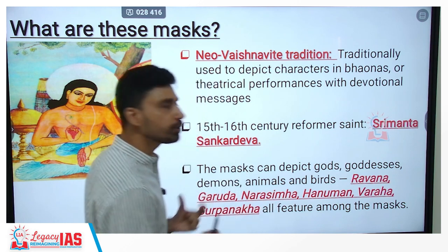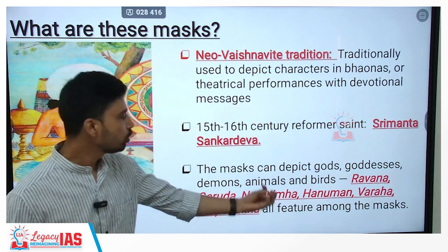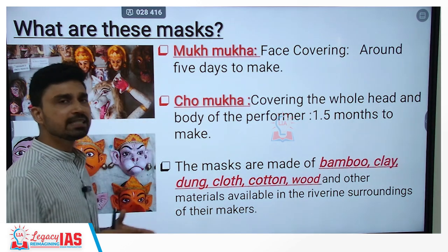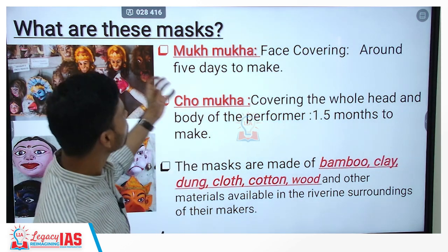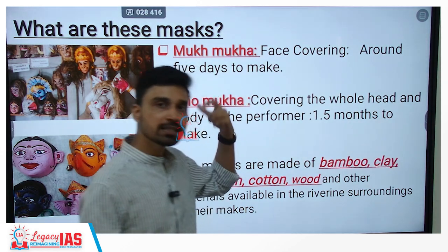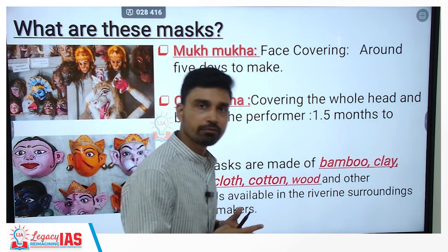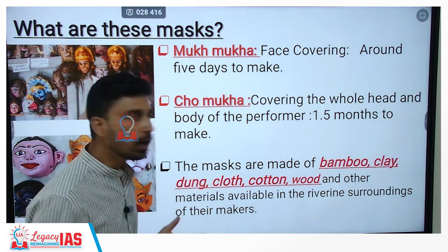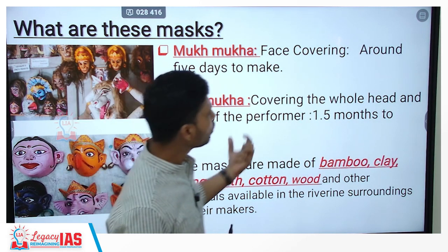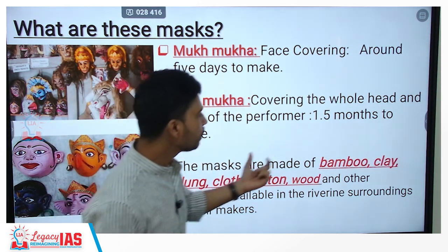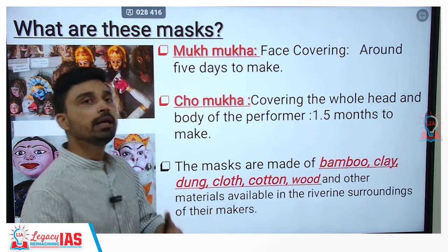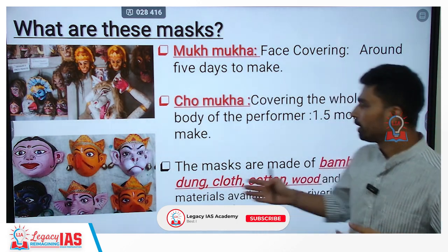The masks also depict major heroes and villains such as Ravan, Garud, Narsimha, Hanuman, Varah, and Surpanakha. The masks are classified into two categories. The first, called Mukha Mukha, covers the entire face of the performer and takes around five days to make. The second, called Chaumukha, covers the entire head and body of the performer and takes about one and a half months to make. These masks are made from materials such as bamboo, clay, dung, cloth, cotton, wood, and other materials available in the riverine surroundings of Majuli island.